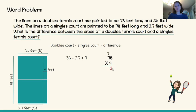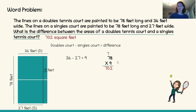9 times 8 is 72, so I put the 2 in the ones place and carry those 7 tens above in the tens place. Now I multiply 9 by the 7 tens in 78: 9 times 7 is 63, but I still have those other 7 tens to add — 63 plus 7 is 70. So 78 times 9 is 702. The difference between the areas of a doubles tennis court and a singles tennis court is 702 square feet — exactly the same answer as before, just a different approach.